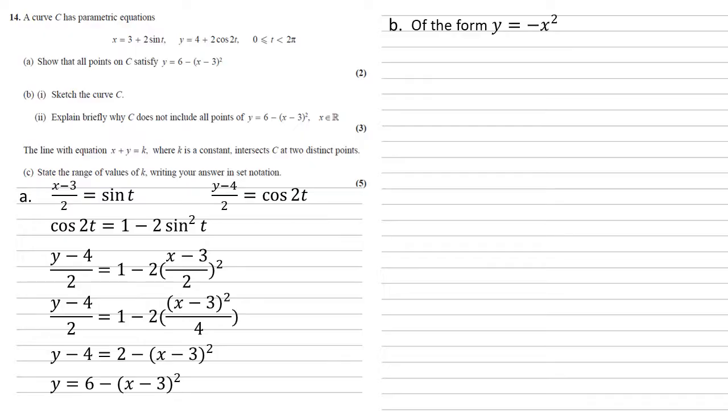Well by our normal translation rules that 6 will translate it six places up the y-axis and the negative 3 will translate 3 to the right along the x-axis. So so far we've got our upside down quadratic curve with a maximum at 3, 6.